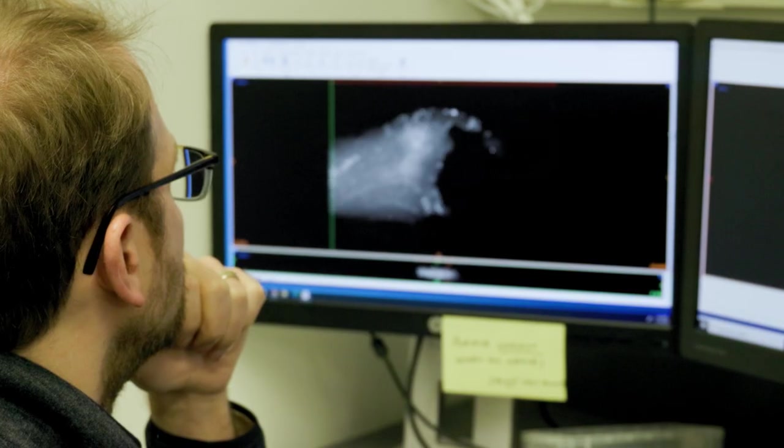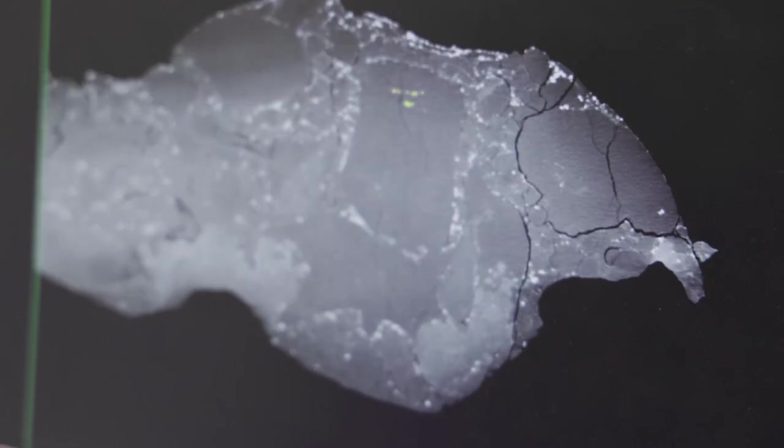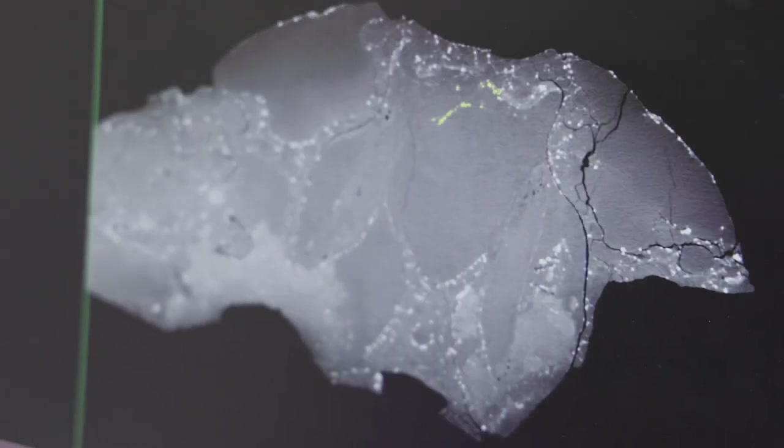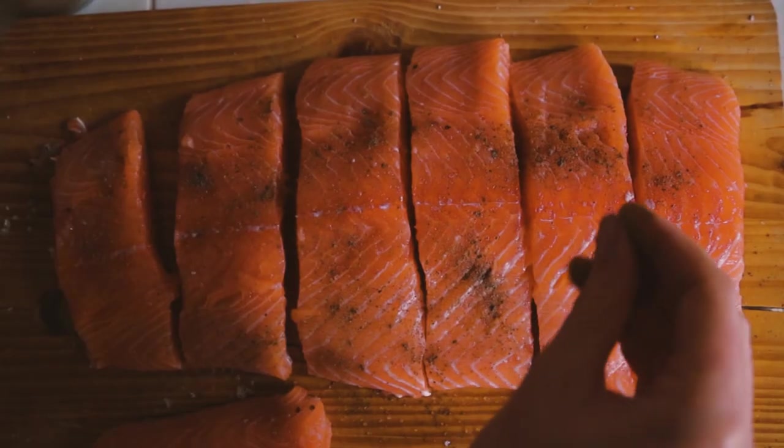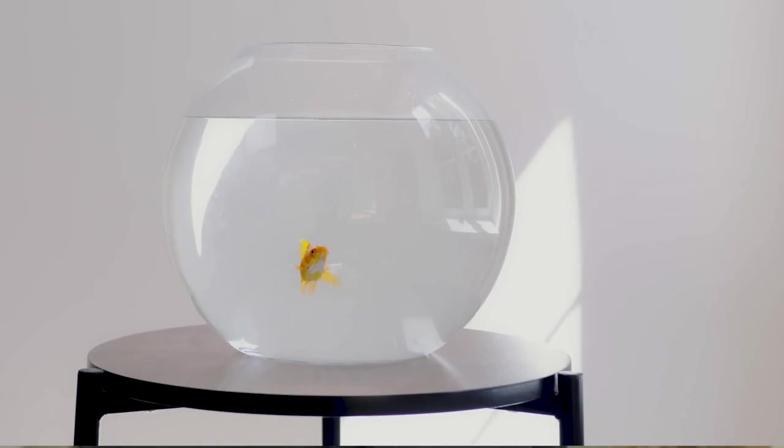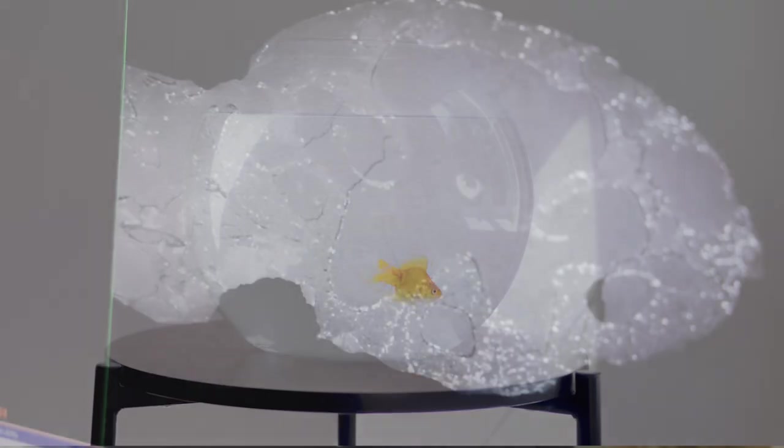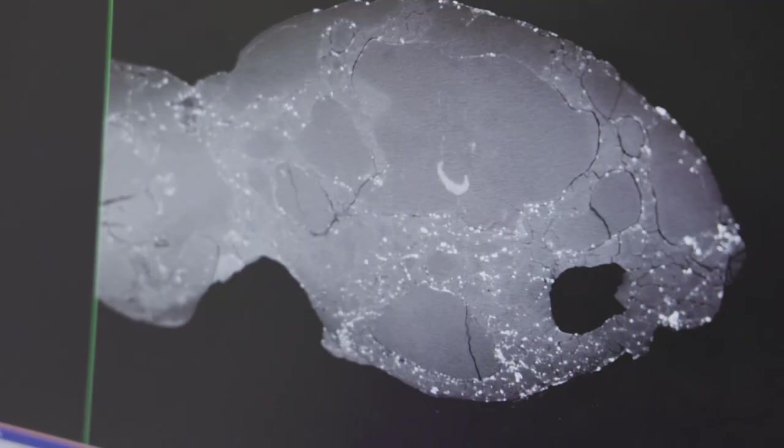Looking inside these fossils using CT scanning with x-rays, we found all kinds of interesting structures. This fish belongs to a group called the rayfin fishes. They include the salmon on your dinner plate, the goldfish in your bowl, and the kinds of fishes you'd see here in the Huron River in Ann Arbor.